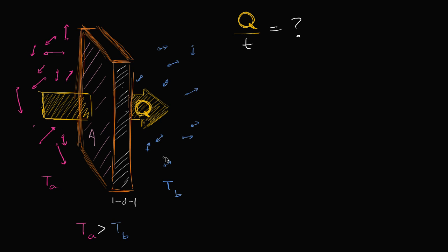I have an interesting system over here. I have two compartments. On the left compartment, I have a gas that is at a temperature of T sub A. And on the right side, I have gas that is at a temperature of T sub B. They are separated by a wall of thickness D. The contact area of the wall, or the contact area of the gas onto the wall, is A. I'm just drawing a section of it.